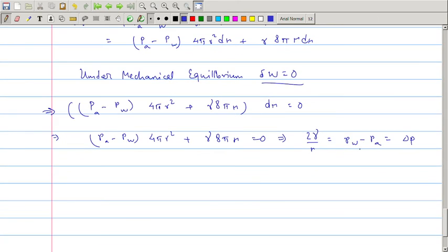So we establish that Pw will be greater than Pa because the surface tension will try to compress the droplet. Delta P is equal to 2 gamma by r. The excess pressure inside the spherical droplet is dependent on the surface tension and its radius. Smaller the radius, larger will be this excess pressure.